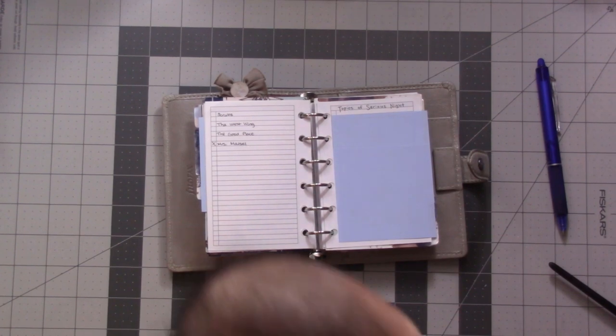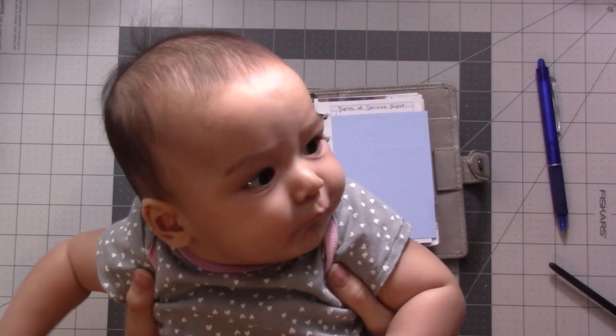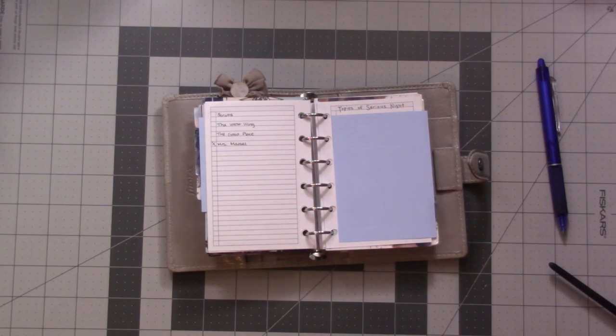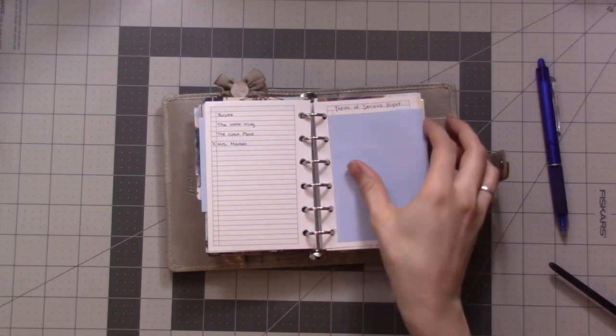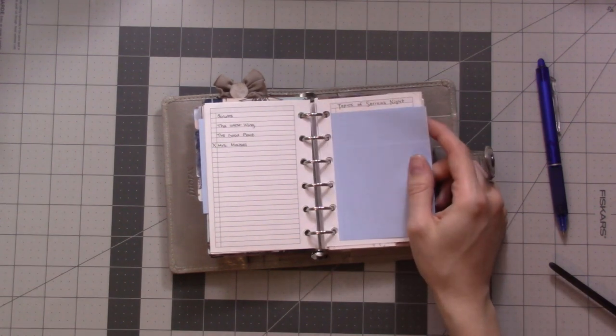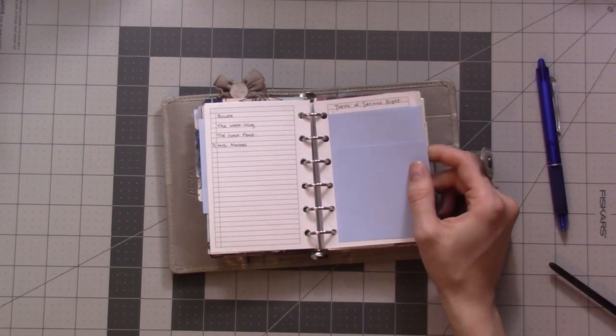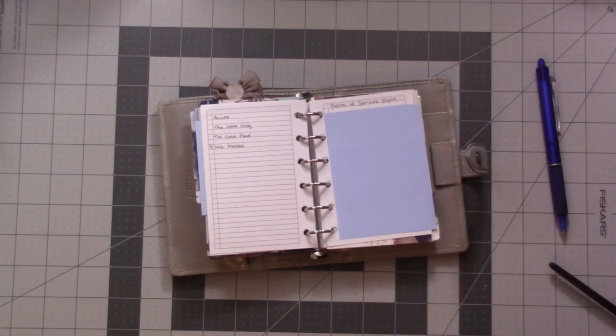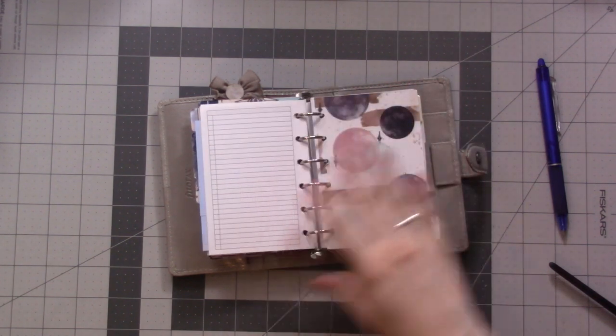I want to do a video about this too, but basically serious night is when my husband and I have stuff to talk about that's uncomfortable or difficult. This page has some freeform journaling and some lists of topics that I wanted to talk to my husband about, and it is of course not for you guys to see.